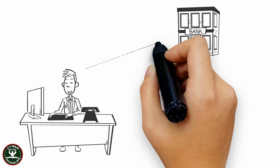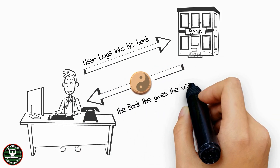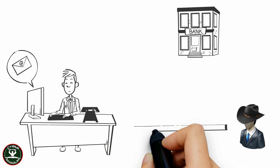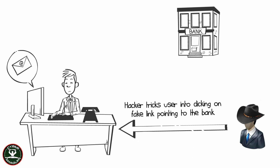The best way to explain CSRF is: a user logs into his bank account. The bank gives him a session token. A hacker would send you an email with a malicious link that looks like it is pointing to some trusted location, but really it connects to your bank.